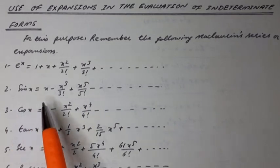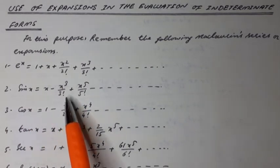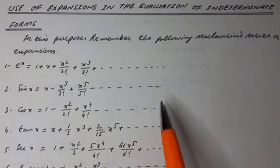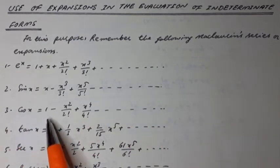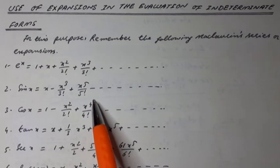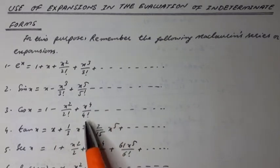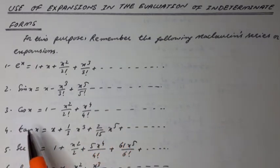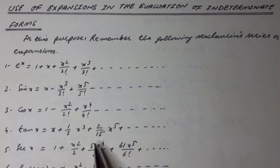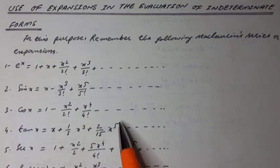sin x is equal to x minus x cubed over 3 factorial plus x to the 5 over 5 factorial minus so on. cos x is equal to 1 minus x squared over 2 factorial plus x raised to the power 4 over 4 factorial minus so on. tan x is equal to x plus 1 over 3 times x cubed plus 2 over 15 times x to the power 5 plus so on.